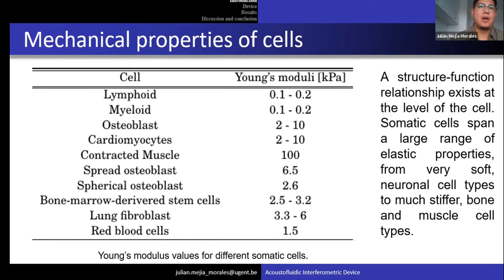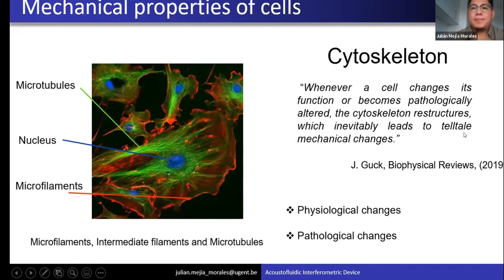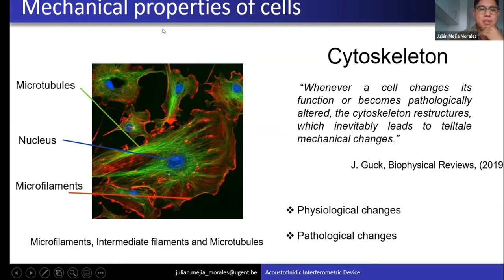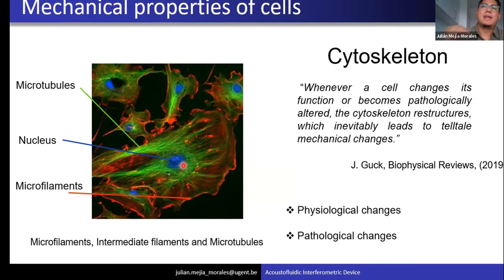The main responsible for these mechanical properties in cells is the cytoskeleton, which is mainly composed of microtubules and microfilaments. Microtubules, shown here in green, are those that resist tension in the cells, so microtubules are the main participants in the mechanical properties. Microfilaments are really important as well, but when the cell needs to apply some force to the medium — it's where the myosin protein moves, like in a ratchet — but that is a different story.